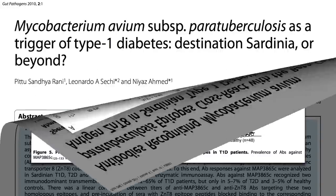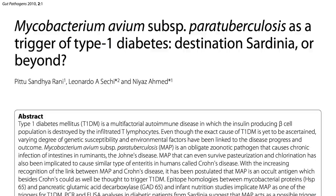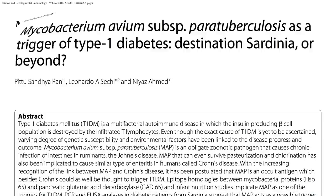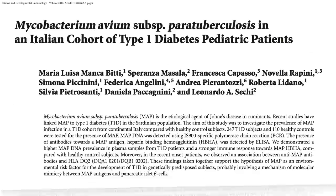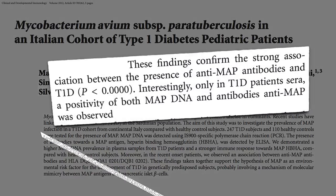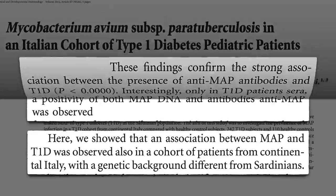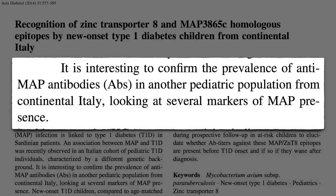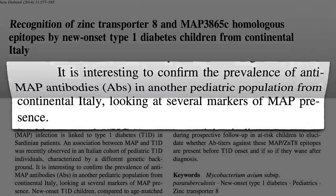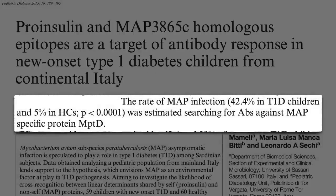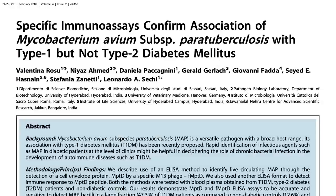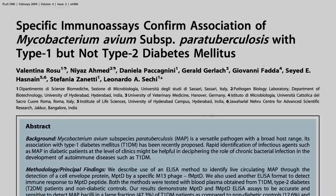But is this just in Sardinia, or might we find these same results elsewhere? The same results were found on mainland Italy with a group of type 1 diabetics with different genetic backgrounds — a strong association between paratuberculosis bacteria exposure and type 1 diabetes — and then confirmed again and again in other pediatric populations, as well as a group of type 1 diabetic adults.